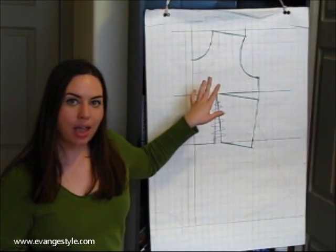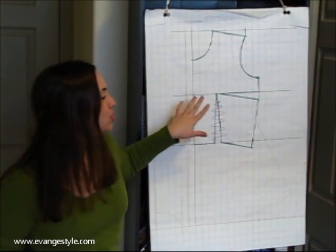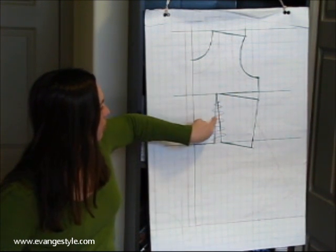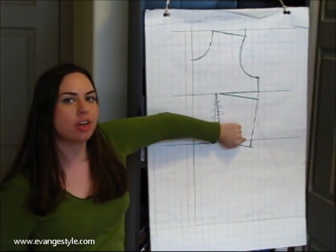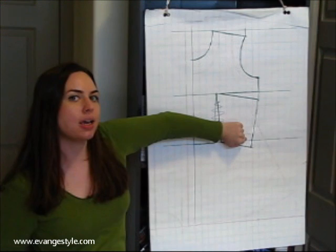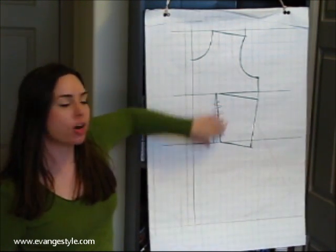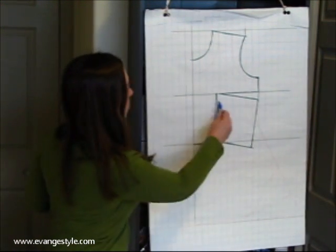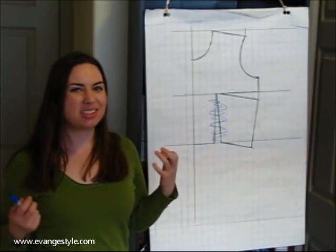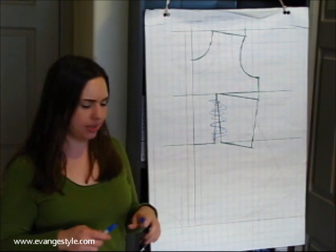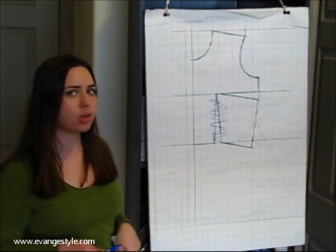If you'd like to learn how to make this, just keep watching. I'm starting with a basic sloper and as you can see there's a side dart and a front dart, and it also curves in a bit on the side. I'm just going to ignore the front dart though — it's the type of shirt I'm making, it's kind of a bit looser, so I'm just going to ignore that.